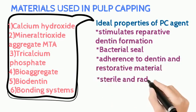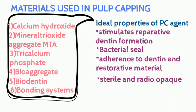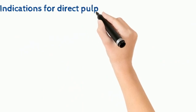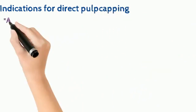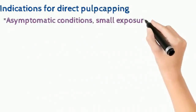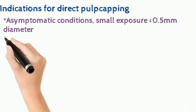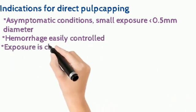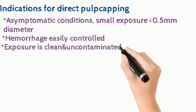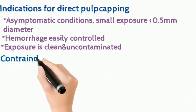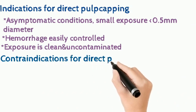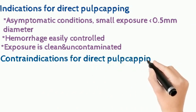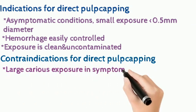Now let's go into indications for direct pulp capping. Asymptomatic conditions where the exposure is less than 0.5 mm diameter. Hemorrhage which can be easily controlled. And exposure where it is clean and uncontaminated. The contraindication for direct pulp capping is large carious exposure in a symptomatic permanent tooth.